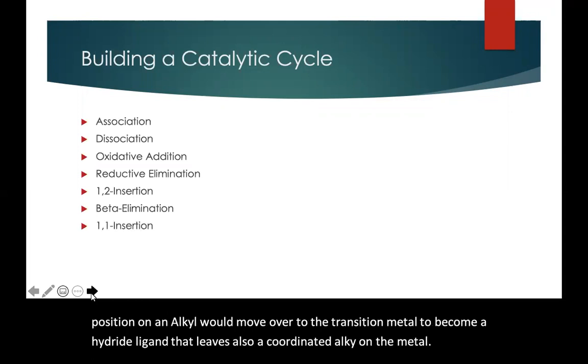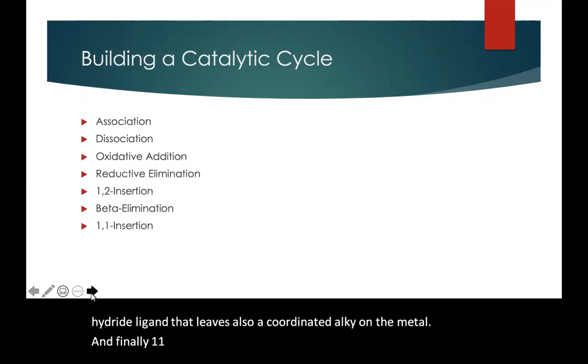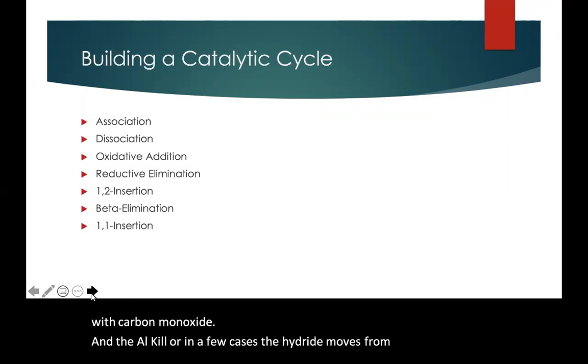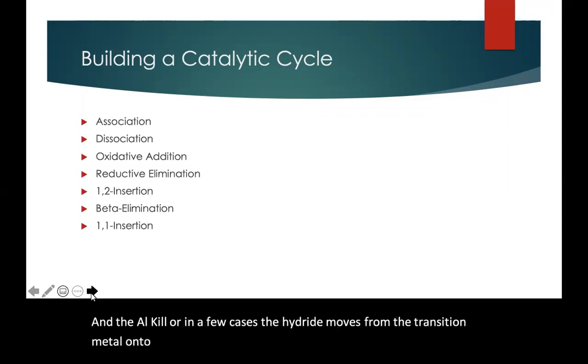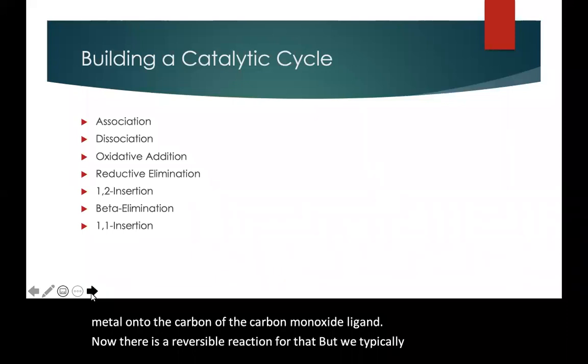And finally, a 1,1 insertion is similar to a 1,2 insertion, but it happens usually with carbon monoxide. And the alkyl, or in a few cases, the hydride, moves from the transition metal onto the carbon of the carbon monoxide ligand. Now, there is a reversible reaction for that, but we typically don't see it, so we won't worry about that one.